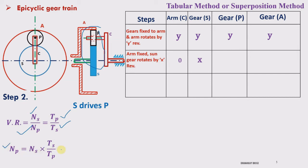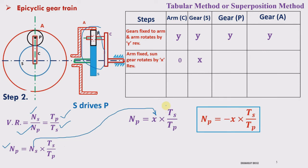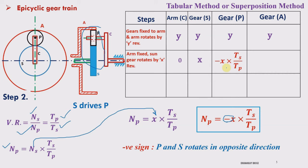We want to determine np, the speed of gear P, so np is taken to the left-hand side and all other remaining terms to the right-hand side. Since ns is x, we substitute x for ns. We also introduce a negative sign because gear S drives gear P in the opposite direction since they are in external mesh with each other — the negative sign indicates opposite direction of rotation. So np = −x × (ts/tp). We now put this value of np in the table.